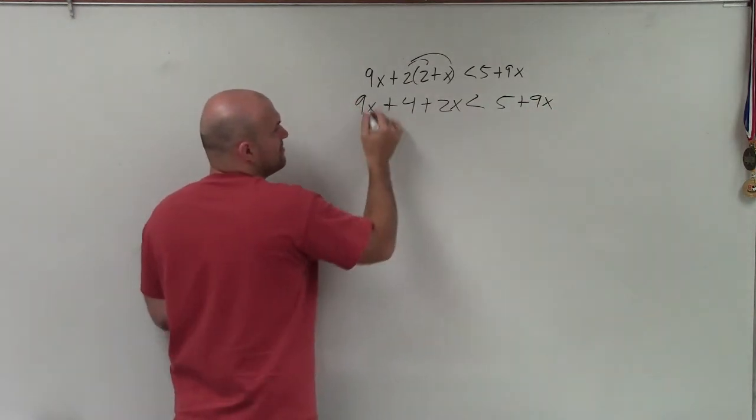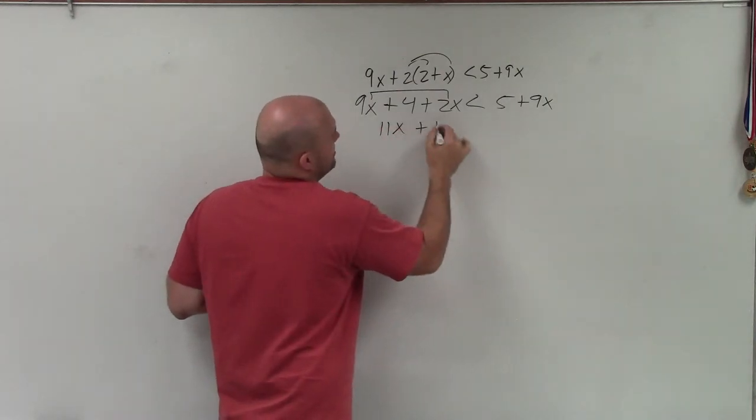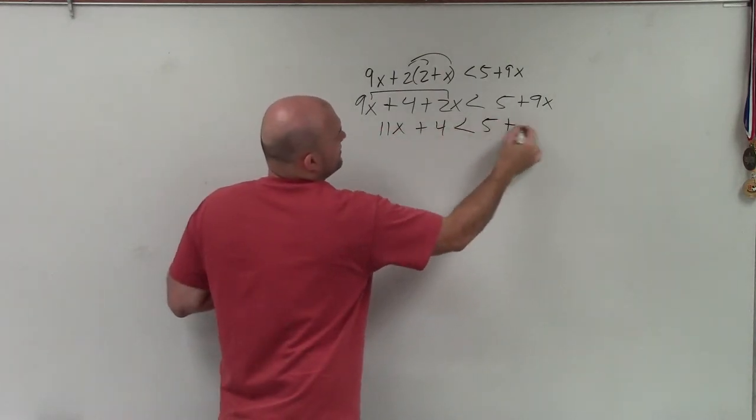Now, I can combine the left side by combining my like terms. 9x plus 2x is 11x plus 4 is less than 5 plus 9x.